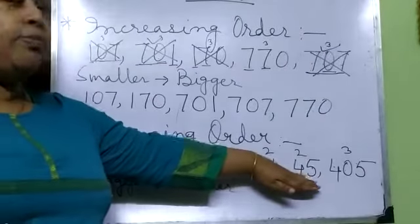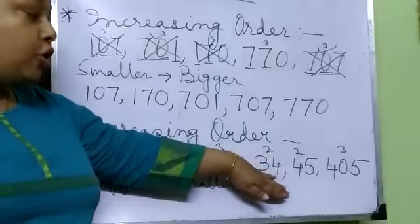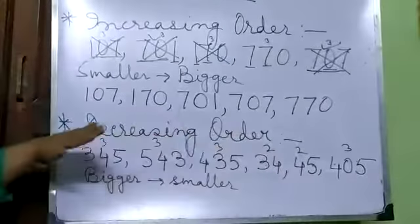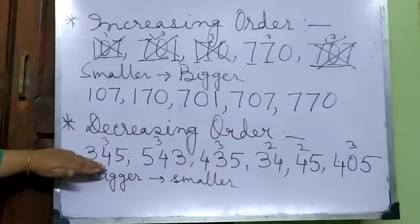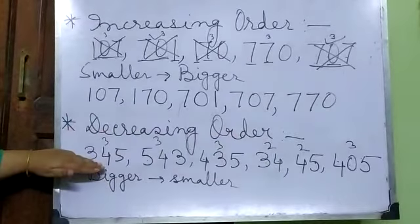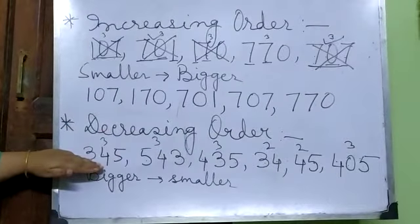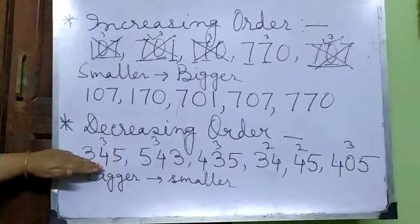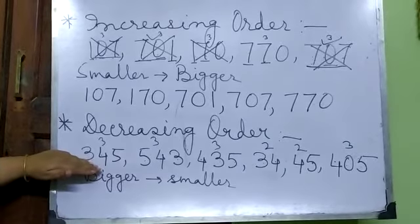The 2-digit numbers will be the smaller numbers. So first we will start with the 3-digit numbers. We will look at the first digits of each of these different numbers.